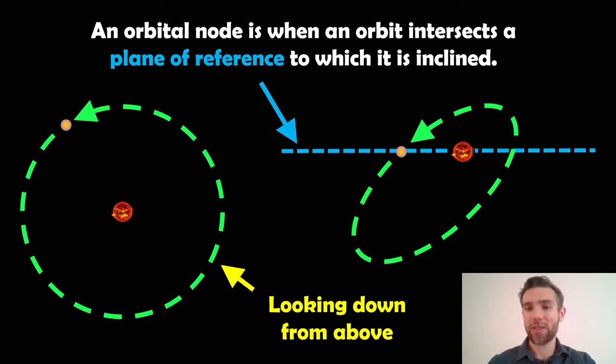So in the example you've got here it's actually orbiting and it's going down through the plane of reference and then when it comes back around it will go up through the plane of reference. So there are two orbital nodes on an orbit and it's where it intersects this plane of reference.